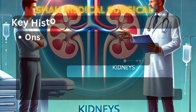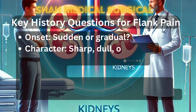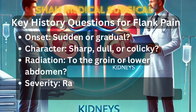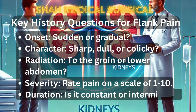Key history questions for flank pain. Flank pain is a common complaint in urology. Key questions to ask include: 1. Onset — was the pain sudden or gradual? 2. Character — is the pain sharp, dull, or colicky? 3. Radiation — does it spread to the groin or lower abdomen? 4. Severity — can the patient rate the pain on a scale of 1 to 10? 5. Duration — is the pain constant or intermittent?